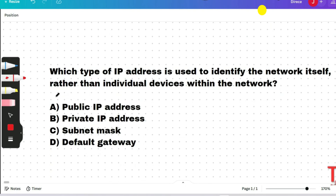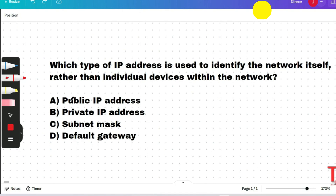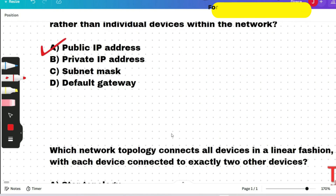Next question: which type of IP address is used to identify the network itself rather than individual devices within the network? A public IP address is the correct answer. A public IP address is used to identify networks on the internet, while private IP addresses are used for individual devices within a network.